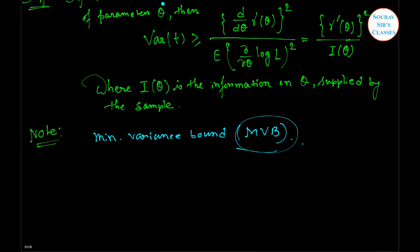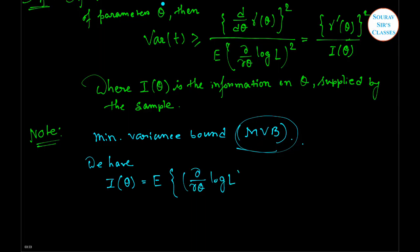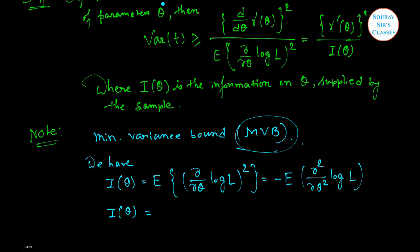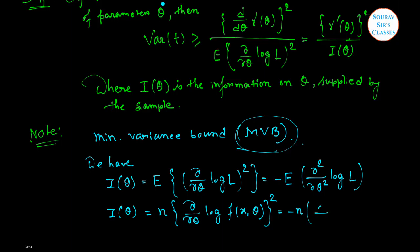Now again we have: I(theta) = E[del/del-theta of log L, whole square] = minus E[del-square / del-theta-square of log L]. And I(theta) = n times E[del/del-theta of log f(x, theta), whole square] = minus n times E[del-square / del-theta-square of log f]. Got it?